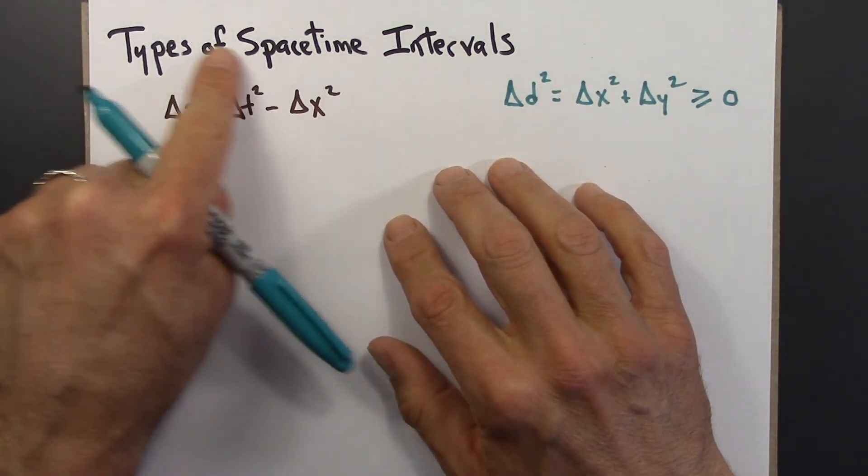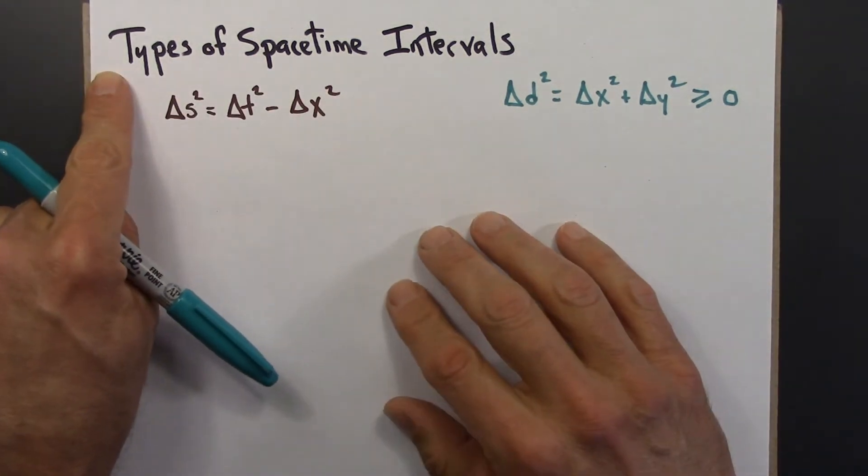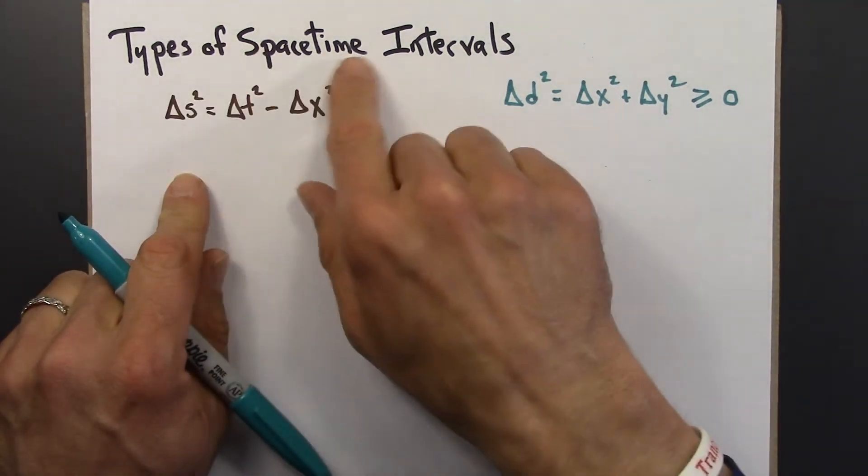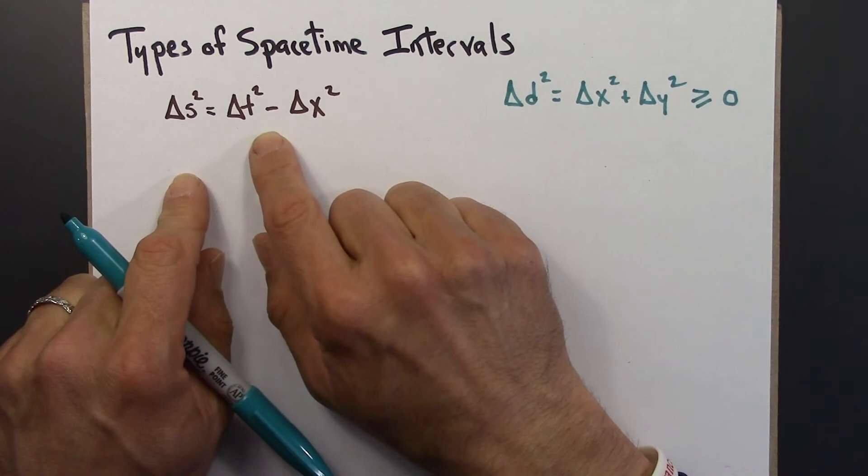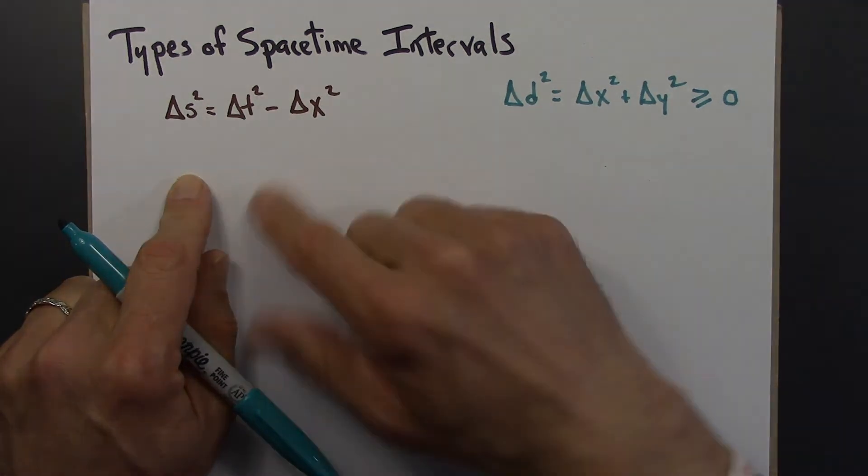So when I refer to these types of space-time intervals, what that corresponds to is the sign, S-I-G-N, plus, minus, or negative of the space-time interval. So there are three cases to consider. Let me write that out, and then we'll talk about it a little bit.